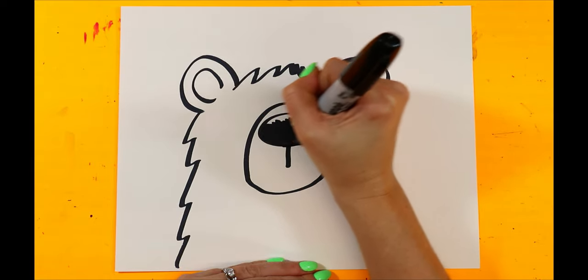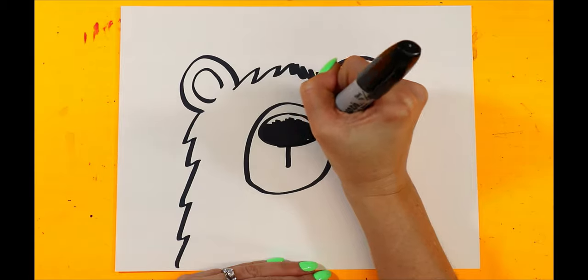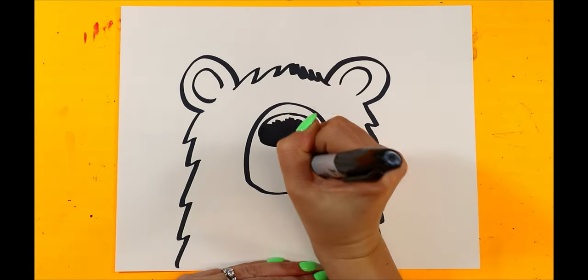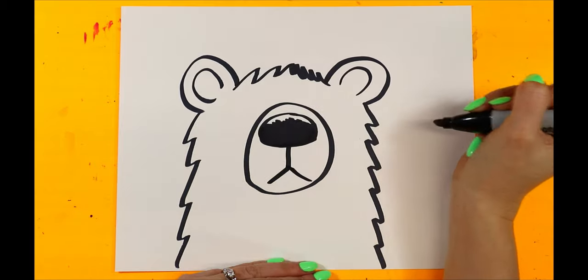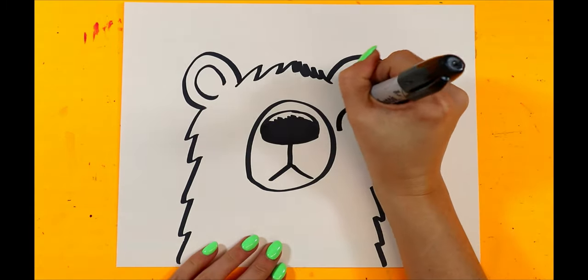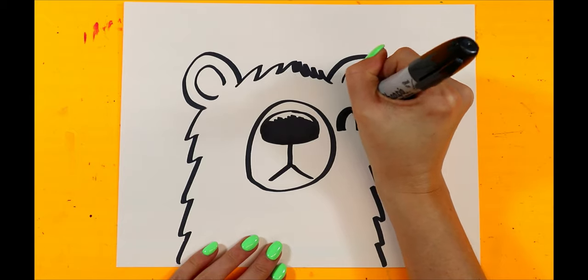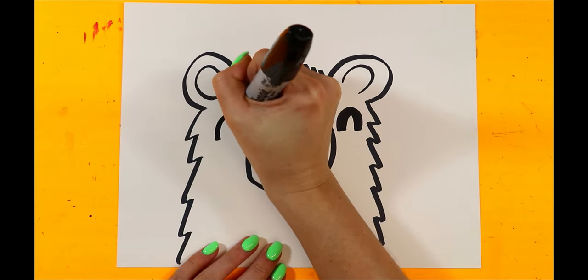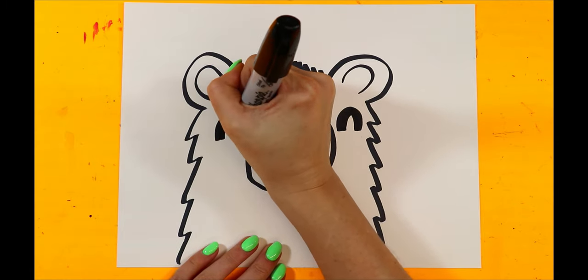And we'll color in the nose, leaving a little bit of white at the top. Add a mouth. We'll add the eyes with two curving upside-down U's and we'll thicken them up.